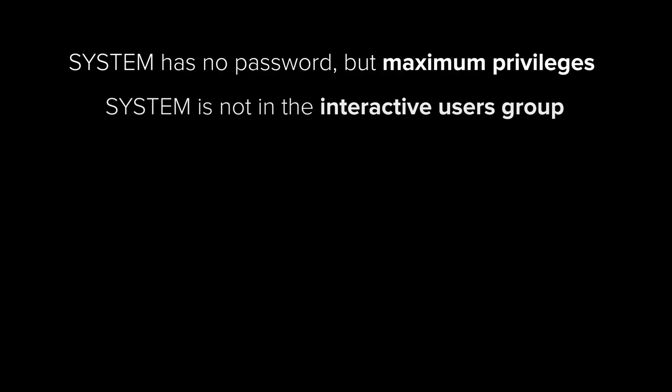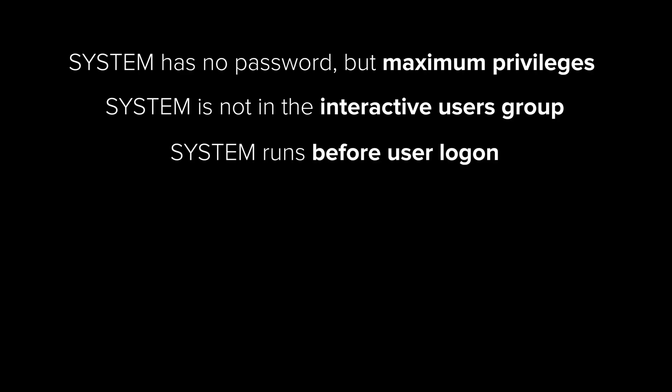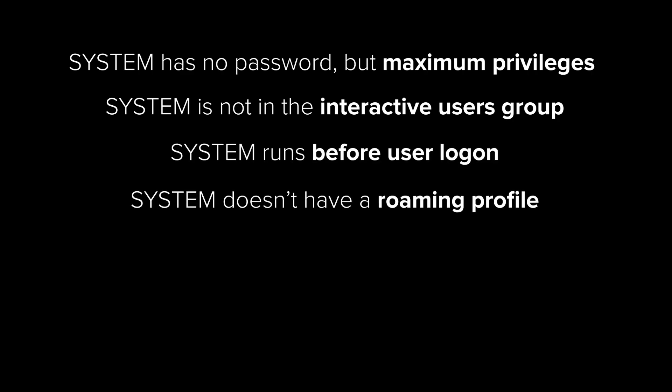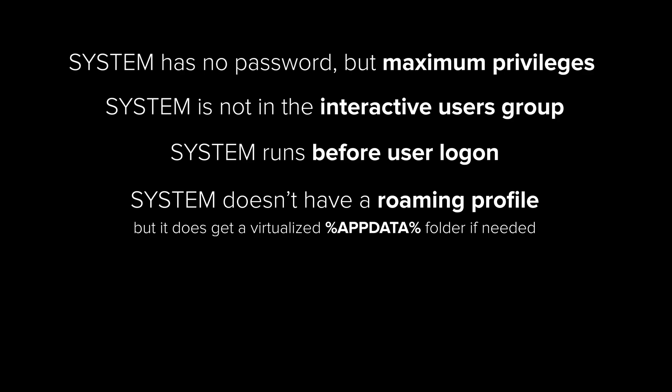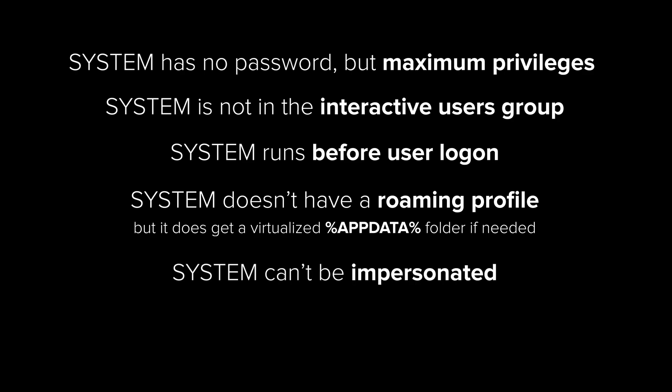System has no password, but maximum privileges. System is not in the interactive users group. System runs before user logon. System doesn't have a roaming profile, but it does get a virtualized, updated folder if needed. System can't be impersonated without valid token evidence. This was a simplified look at a complex part of Windows — the truth goes even deeper, into tokens, sessions, handles, and more.